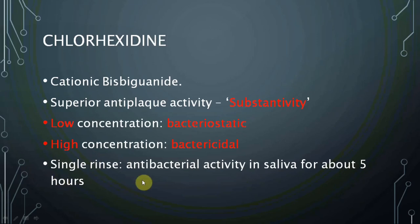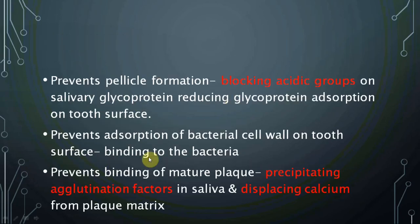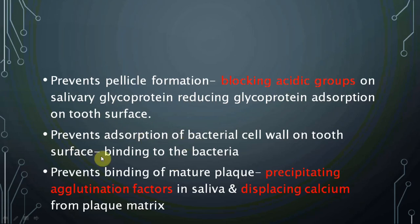A single rinse of chlorhexidine provides antibacterial activity for at least five hours. It prevents pellicle formation by blocking the acidic groups on glycoproteins and reducing glycoprotein adsorption on tooth surfaces. It also prevents adsorption of bacterial cell walls on tooth surfaces by binding to bacteria, and prevents binding of mature plaque by precipitating agglutination factors in saliva and displacing calcium from the plaque matrix.